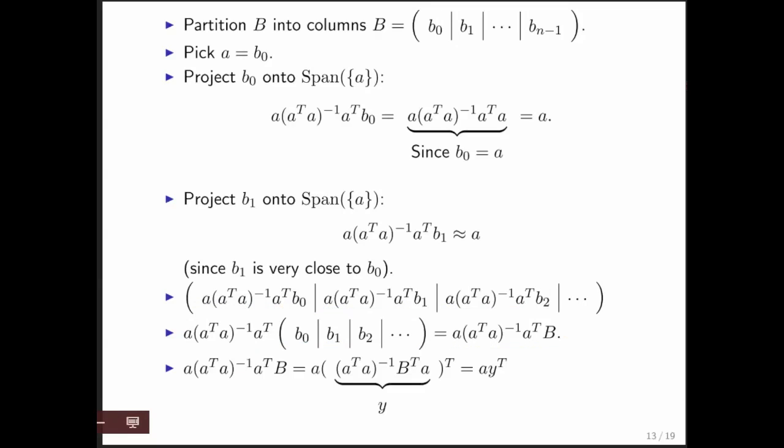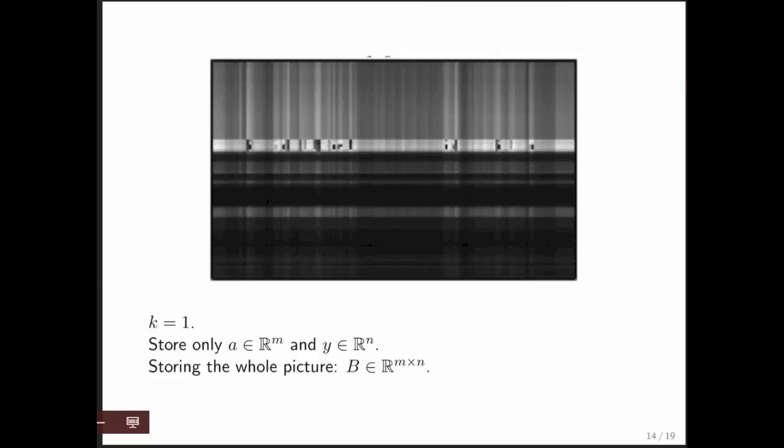We can then take this and say, hmm, what do we get if we do this? Well, this here is a vector times a matrix multiply. We saw in week four that that's just a row vector. And then this is just a scalar. If you do a scalar times a row vector, you just get a row vector. So what this really is is just a column vector times a row vector. And let's call that row vector y. Well, y transpose, which means that the vector is just y. And so now we notice that when we project each of the columns onto the space spanned by a, we can think of the result as being that vector a multiplied by a row vector.